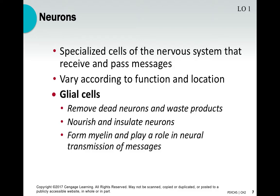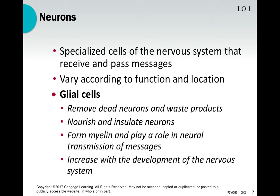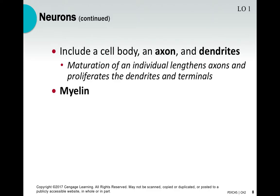The nervous system also contains glial cells — specialized cells whose job is to remove dead neurons and waste products, insulate and nourish neurons, and ensure they're working properly. Think of them like a pit crew in NASCAR: they keep things working so you can stay in the race. They also form myelin, a substance that speeds up the rate of neural communication. Glial cells increase as our nervous system develops, and much of our nervous system continues developing for the first 25 years of life.